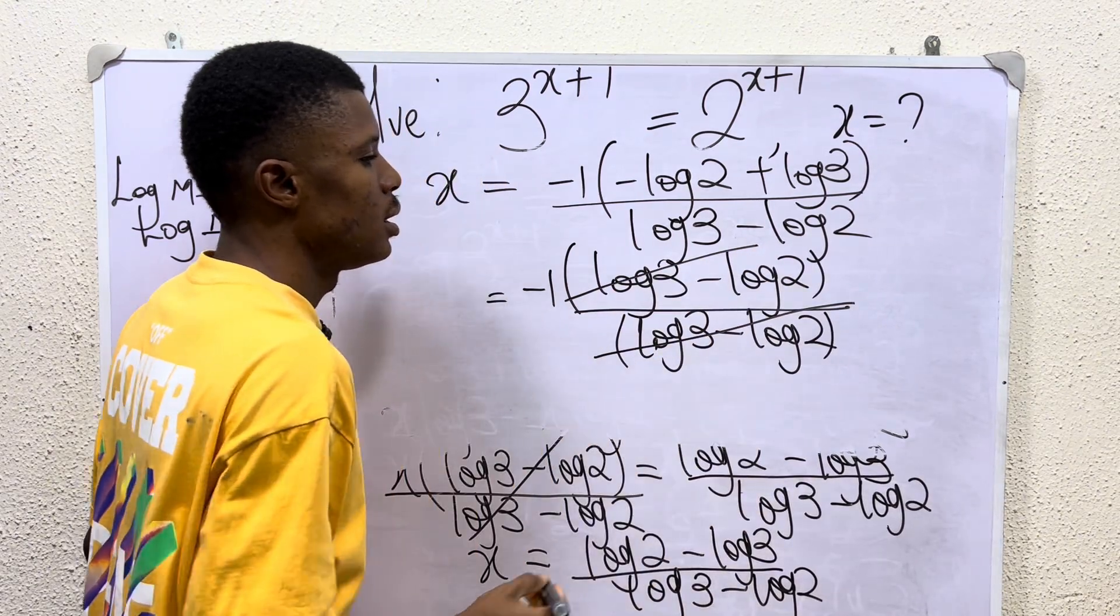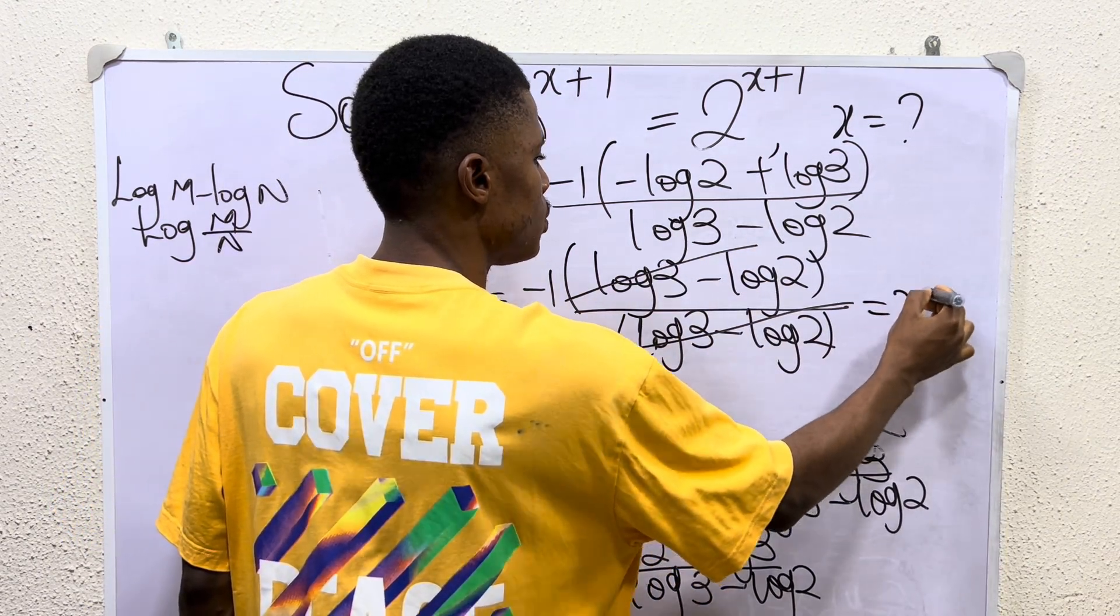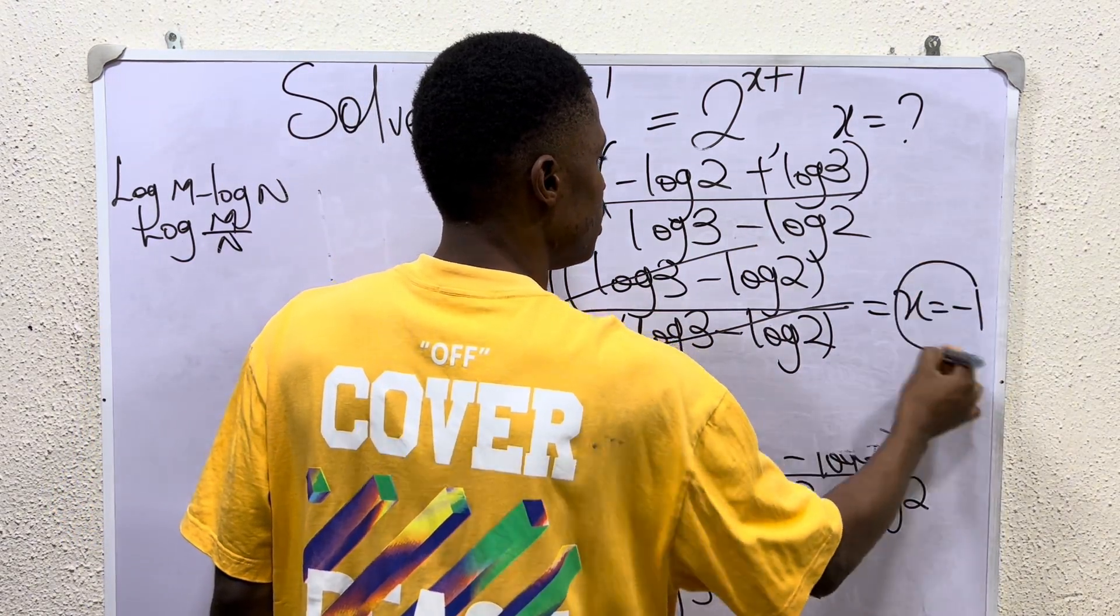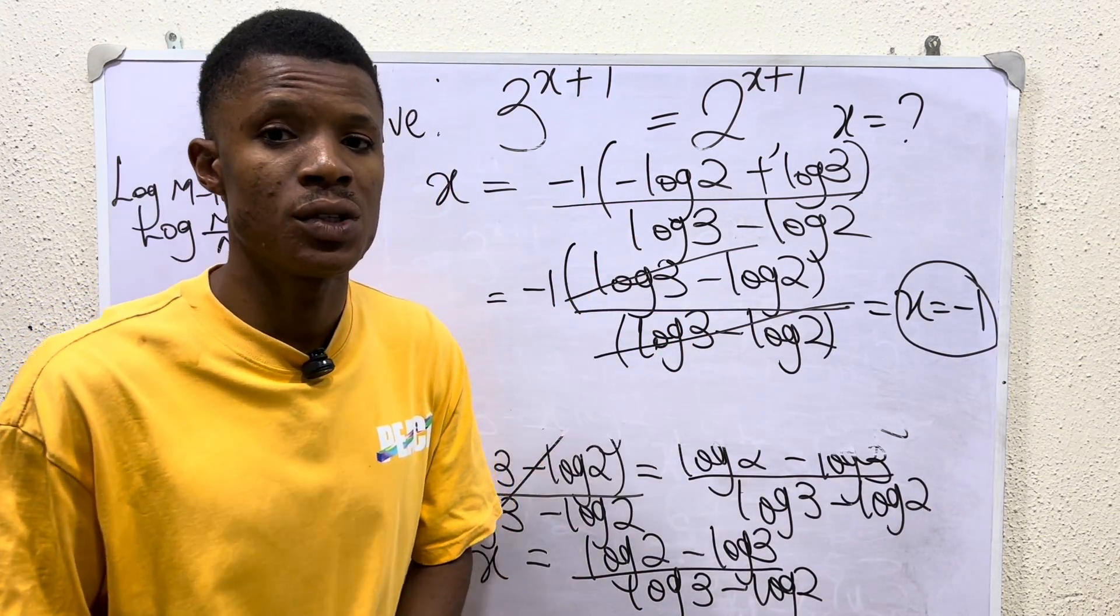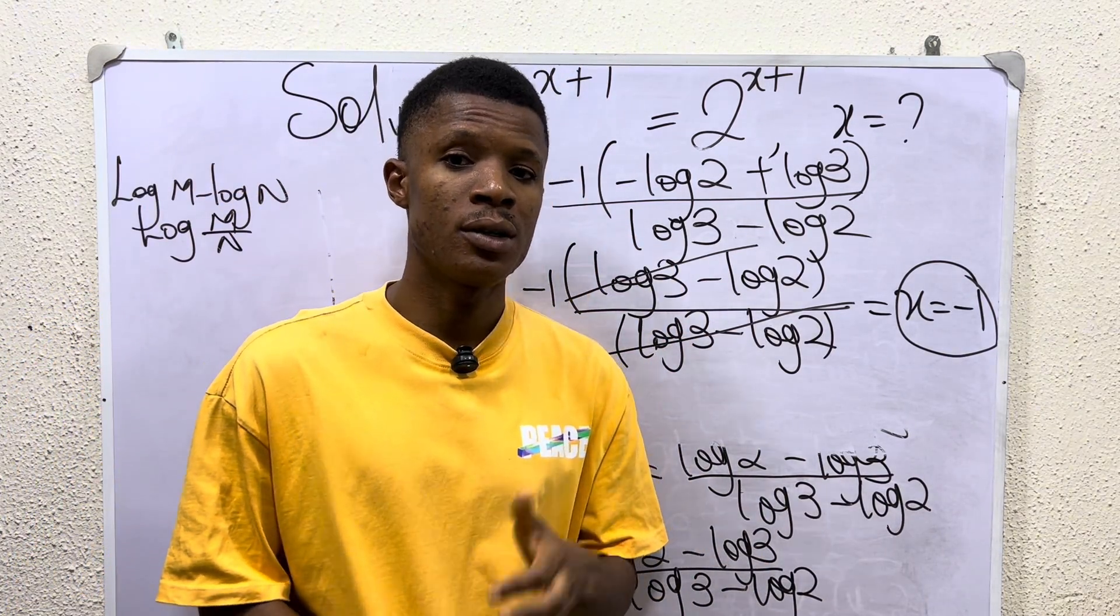If you have this, what do you observe? Log 3 will cancel out. The answer for x—x will just be equal to -1. So x can only be -1 to satisfy this initial equation. Like and share for more. Goodbye!